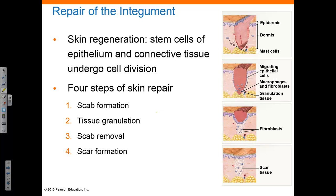As healing occurs, the clot breaks down and circulation to the area decreases. Scar tissue forms and differs from the original tissue in several ways: it has more collagen fibers, fewer blood vessels, and any glands, nerves, and muscle cells damaged in the injury are replaced by new fibrous tissue. So while the integument can repair itself, it will not be able to completely restore its original structure after an injury.